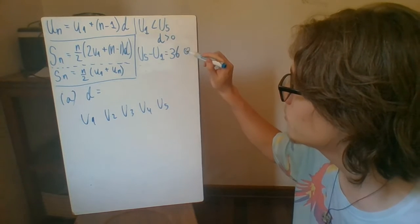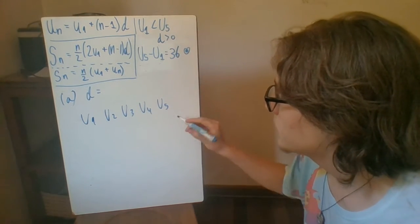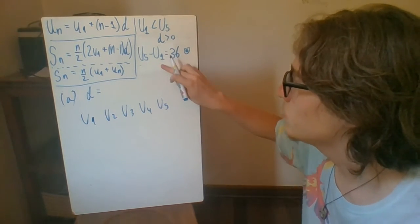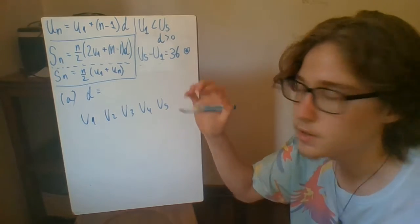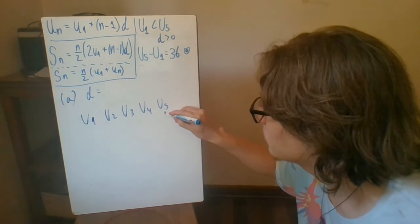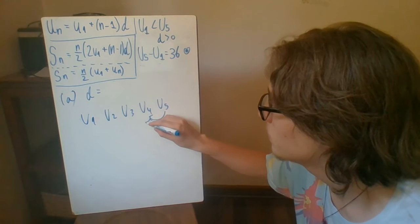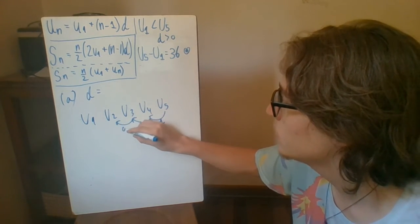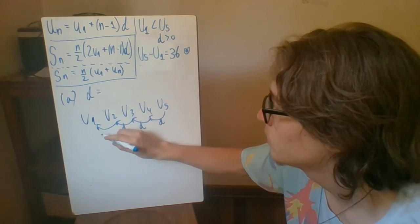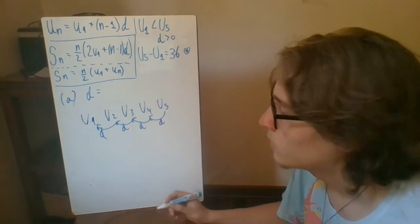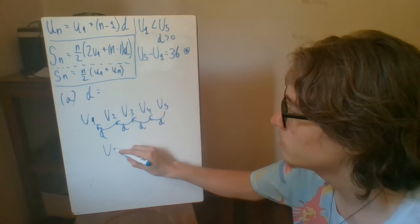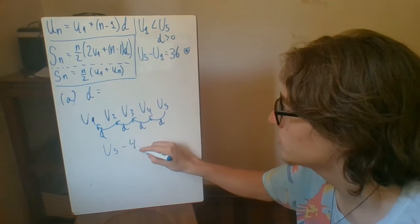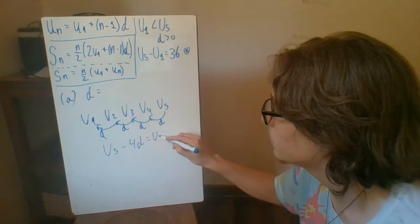And trying to use this piece of information right here, I ask myself, from u5 to u1, how many times do I apply d? So here it's once, twice, three times, and four times.